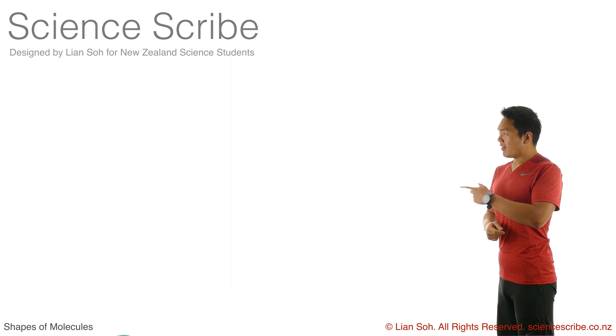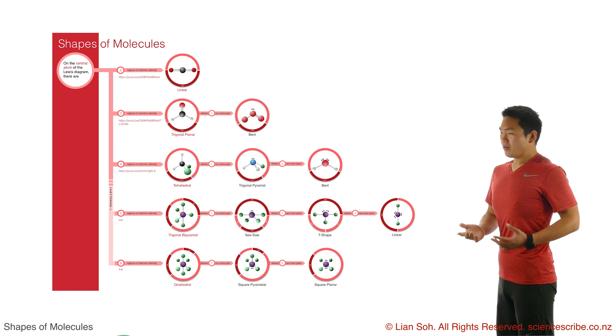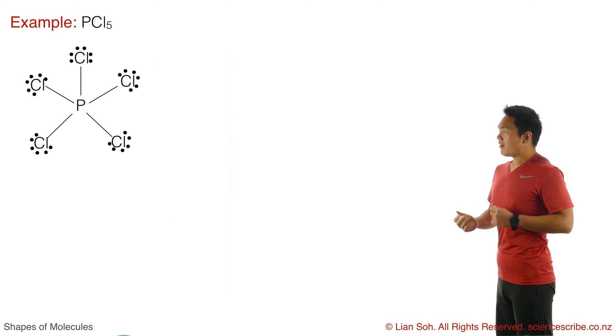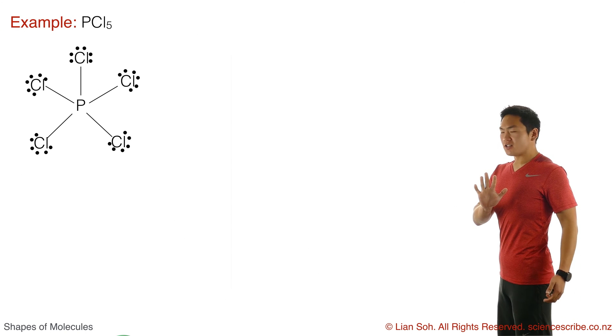To use this video, you're going to need this table. If you don't have that table, go and get one. Okay, so let's say you popped your Lewis diagram down and you notice that there are five regions of electron density around a central atom.